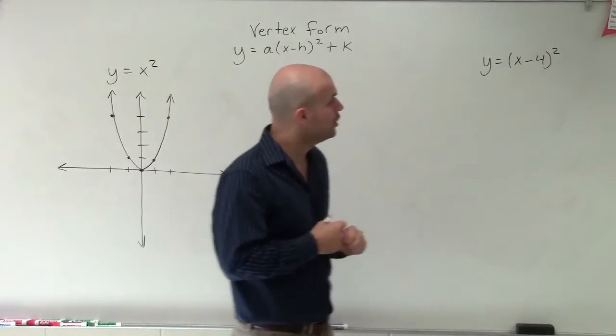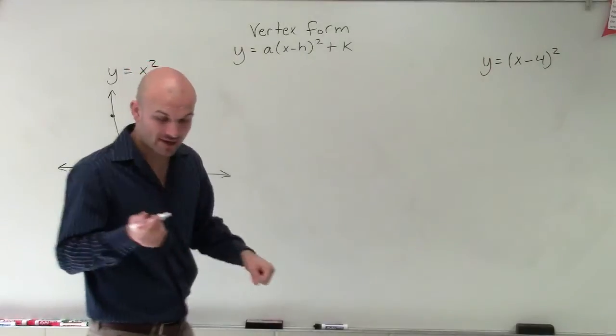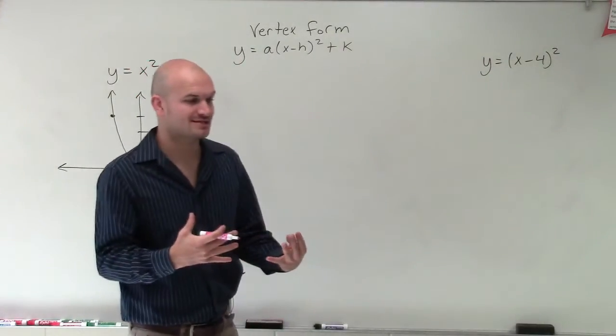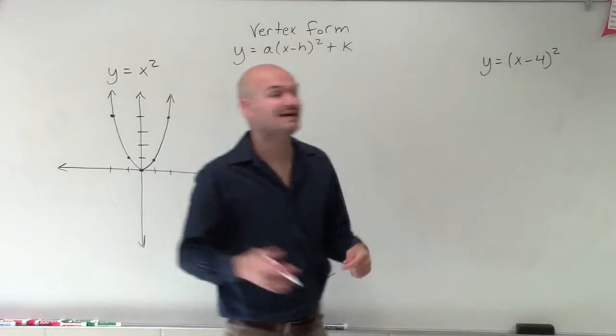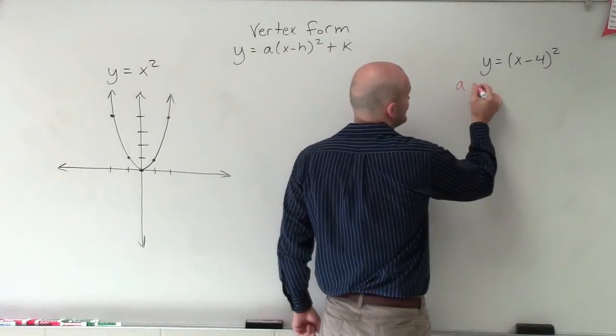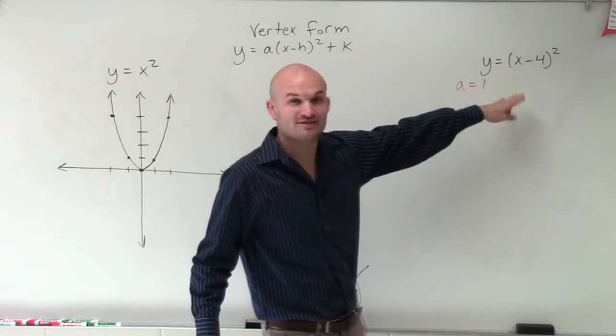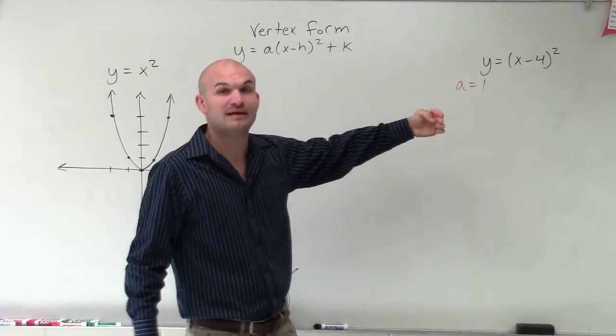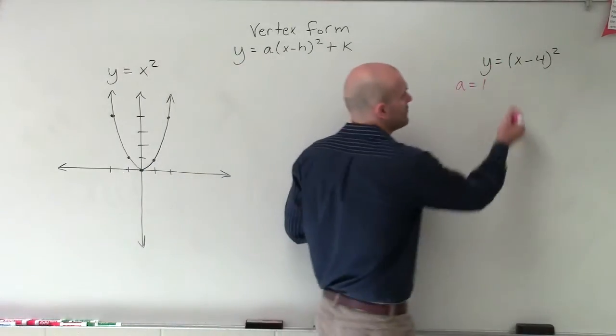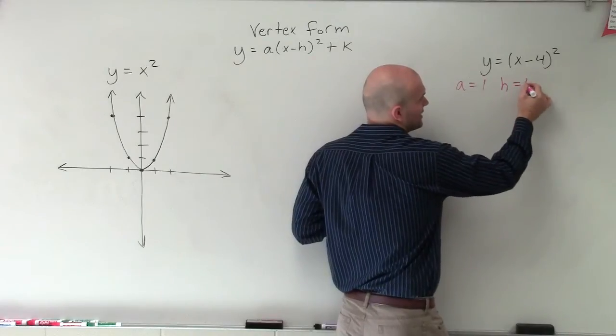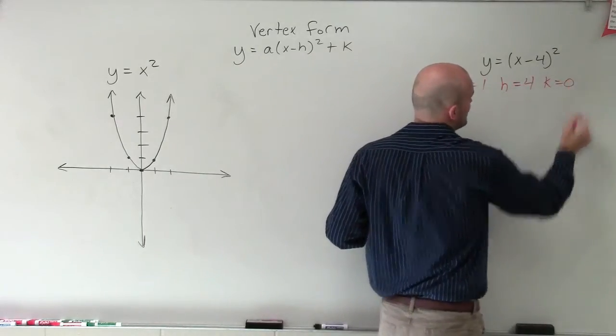So when I look at the equation y equals x minus 4 squared, I need to determine and look at this and say, what are my a, h, and my k? So my a, in this case, is still going to be 1. If I was to multiply this out, I would still have an x squared with nothing being multiplied except for 1. However, my h, and this is going to get a little bit tricky, is going to be 4, and my k is equal to 0.